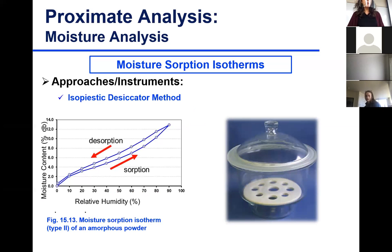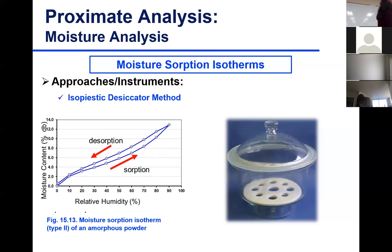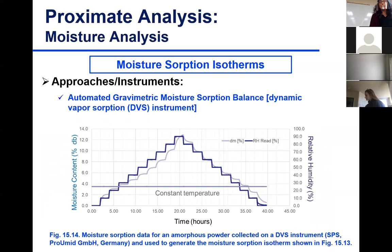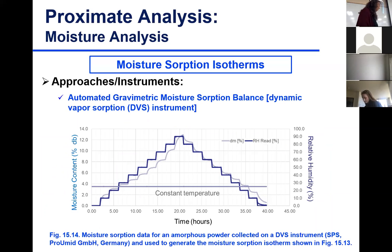You can plot both sorption and desorption isotherms. There are also dynamic vapor sorption instruments that can give you moisture sorption isotherms in a shorter period of time, equilibrating faster and measuring moisture content and relative humidity simultaneously at different water activities — you don't have to incubate samples for two or three weeks.